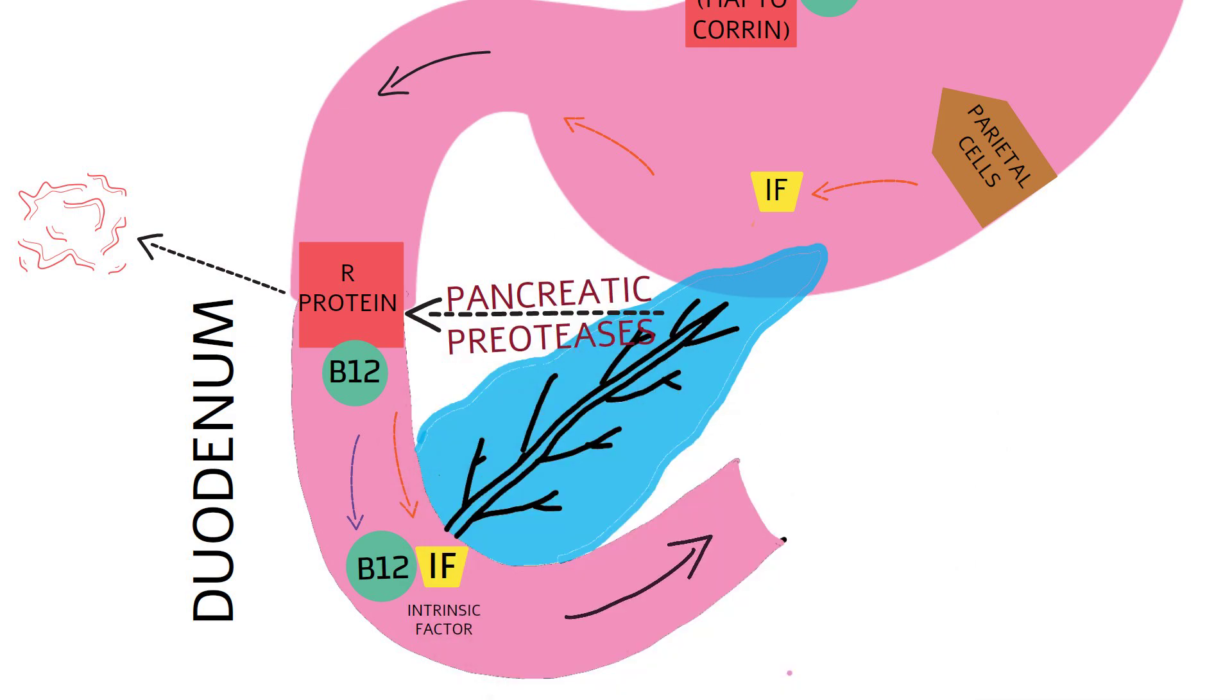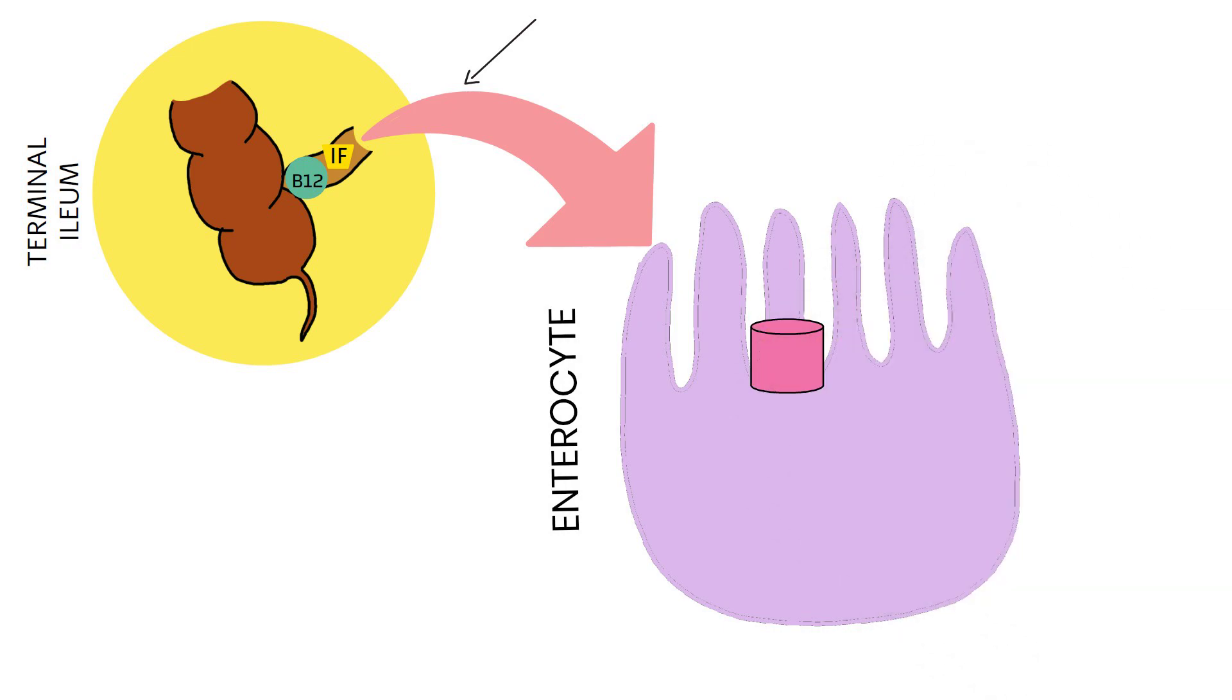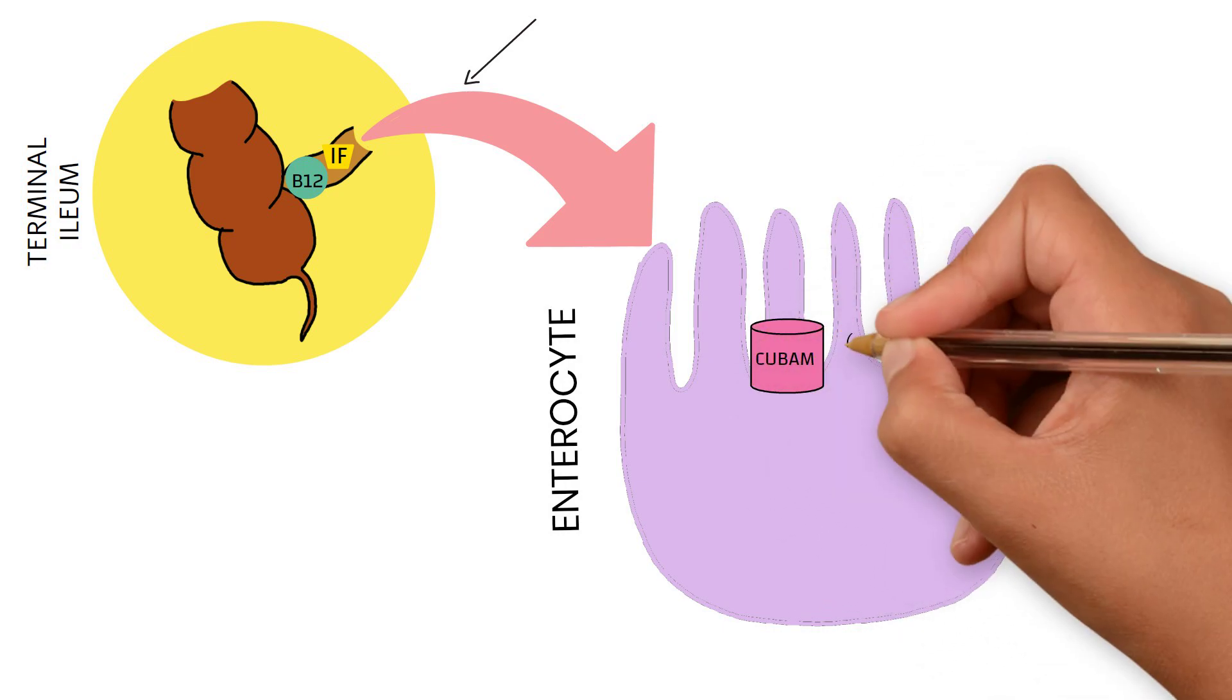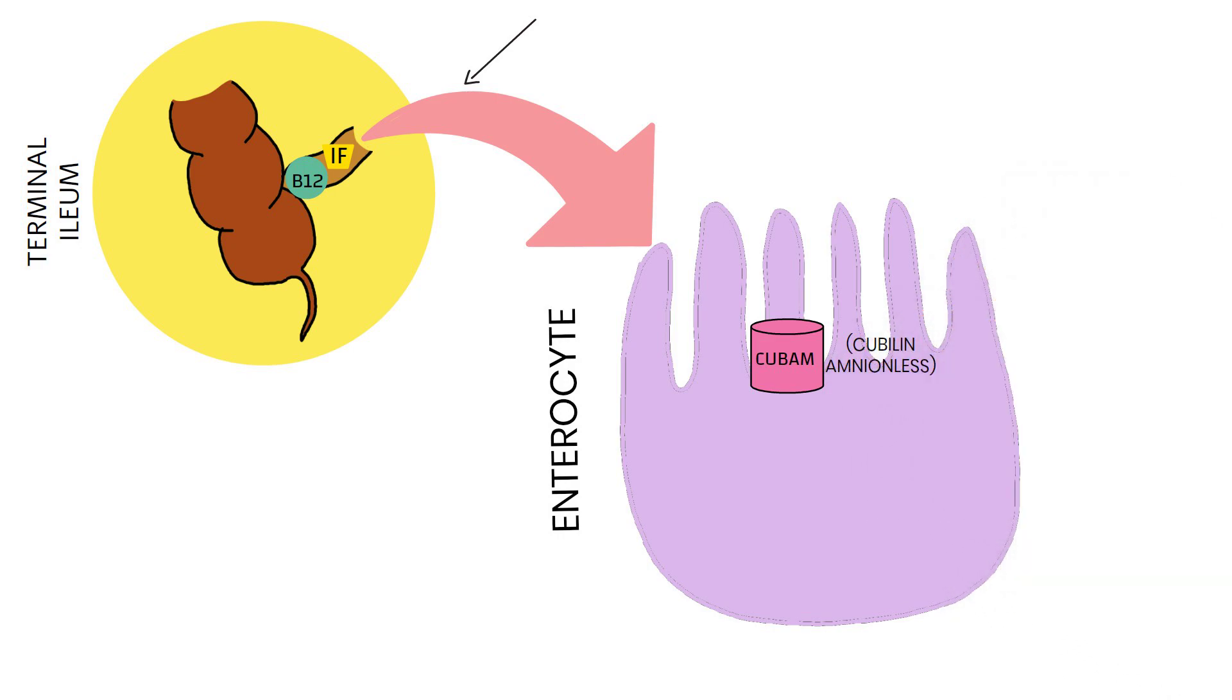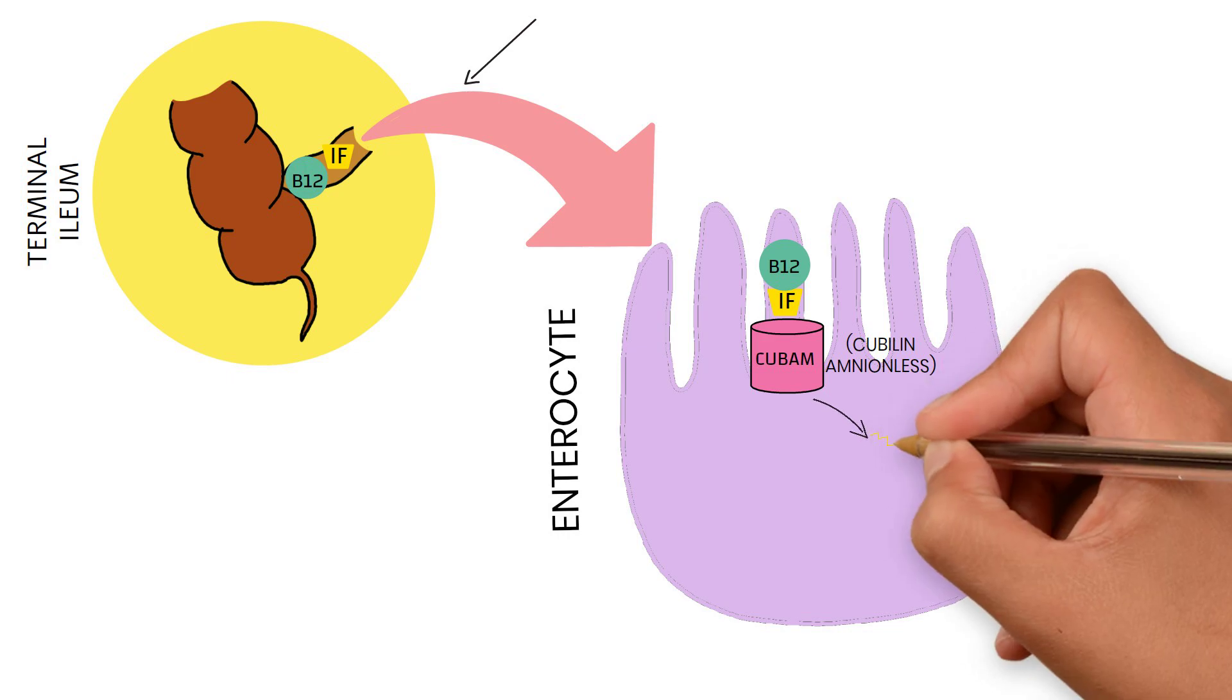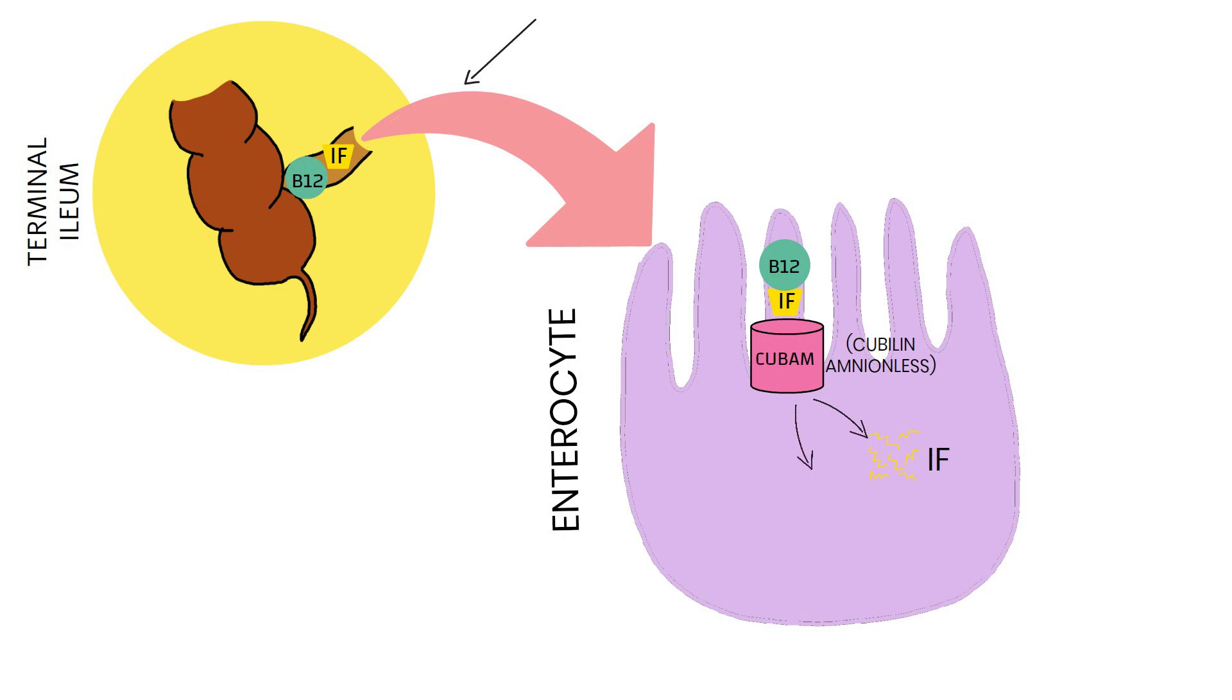This B12-intrinsic factor complex then travels and finally reaches the terminal ileum. Inside the ileum, it enters enterocytes. This complex enters the enterocyte by receptor-mediated endocytosis; the receptor is called cubilin, a combination of two proteins: cubilin and amnionless. Once inside the enterocyte, intrinsic factor is degraded by lysosomes and B12 is released.